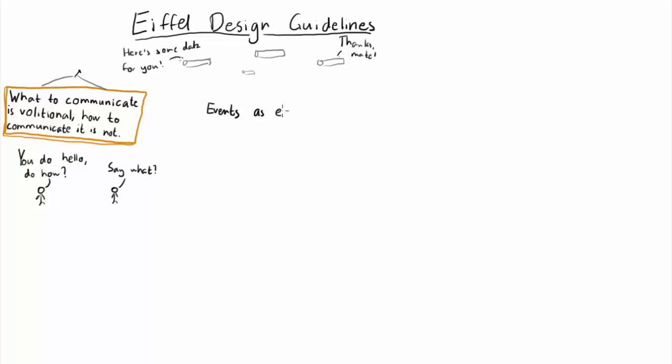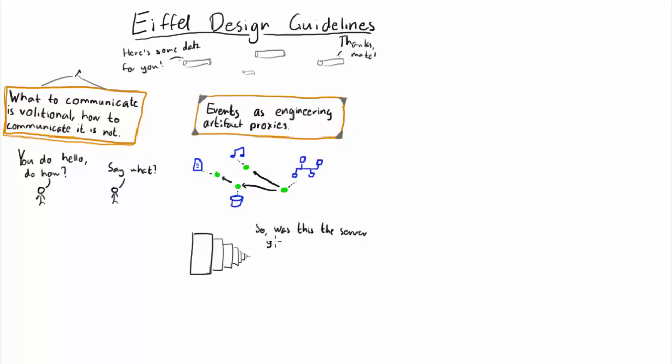The second guideline is events as engineering artifact proxies. An engineering artifact is anything we generate during development: a source code revision, a sound clip, documentation, a test case execution, or why not an environment definition? Anything. A lot of the time, these can be difficult to identify as unique entities, and sometimes the only way of identifying them is to describe them. Like an environment, for instance. Sometimes it's important to be able to point to a specific environment where a test was executed without having to describe it in detail, yet without confusing it with another similar environment.